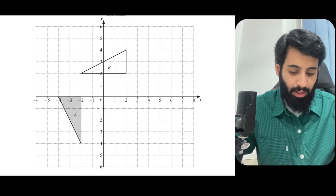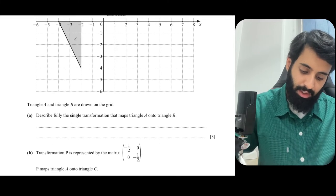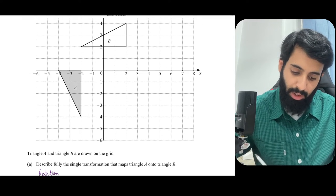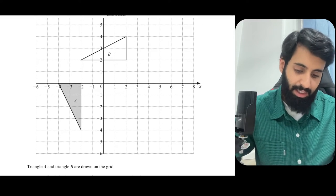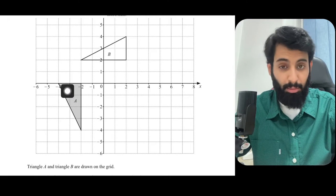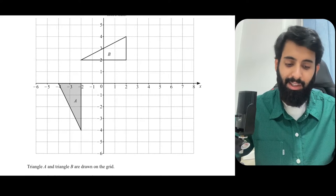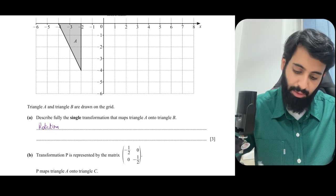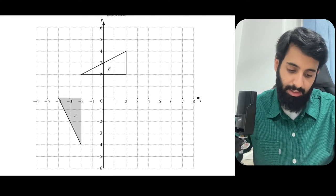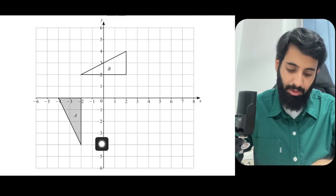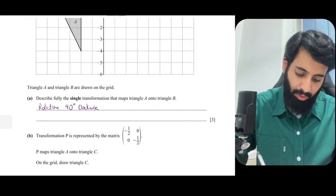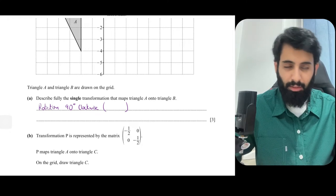Now that we know this is rotation, let's write that down. This is a three-mark question: one mark for rotation, one mark for angle and direction, one mark for the center. The angle has to be 90 degrees — this line is horizontal before rotating and vertical after, and you need 90 degrees to rotate a horizontal line to vertical. Since it has gone this way, this is 90 degrees clockwise.